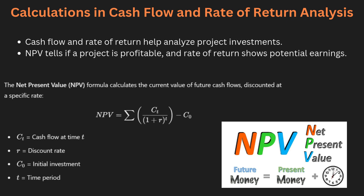In the cash flow analysis you calculate the total inflows and outflows over a project's life. This helps to track the profitability. The net present value (NPV) method calculates today's value of the future cash flows using a discount rate. A positive NPV indicates profitability.